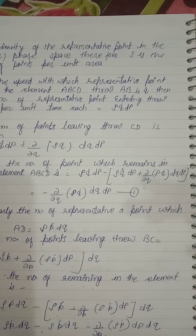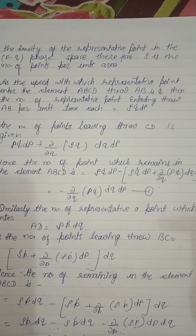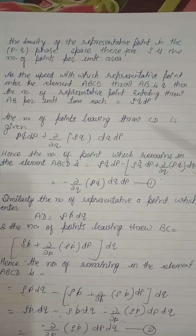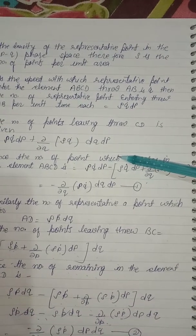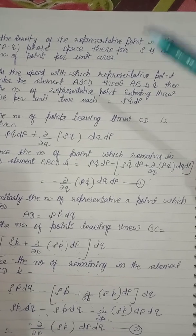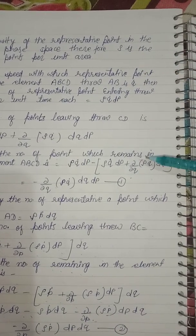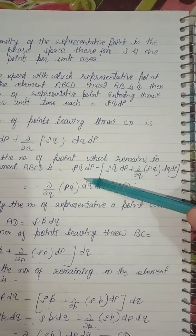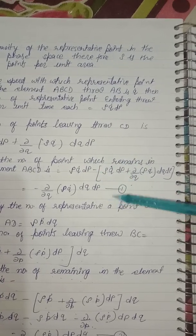The number of representative points entering through side AB per unit time is ρ Q̇ dP. The number of points leaving through side CD is given by: ρ Q̇ dP + (∂/∂Q)(ρ Q̇) dQ dP. So the net flux through AB and CD gives us equation one: minus (∂/∂Q)(ρ Q̇) dQ dP.